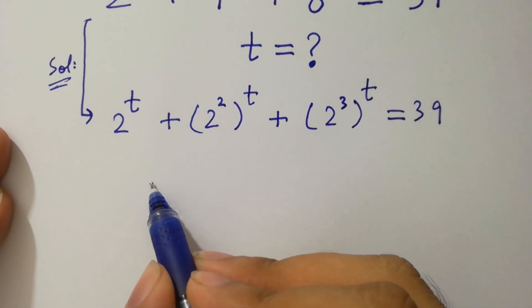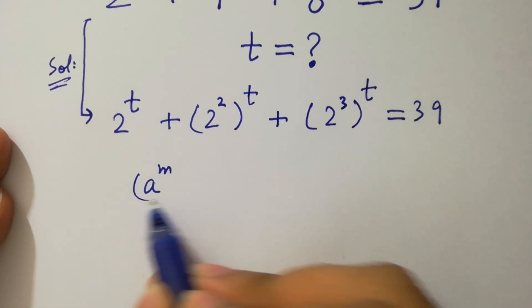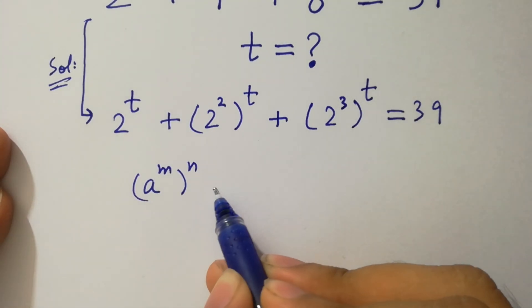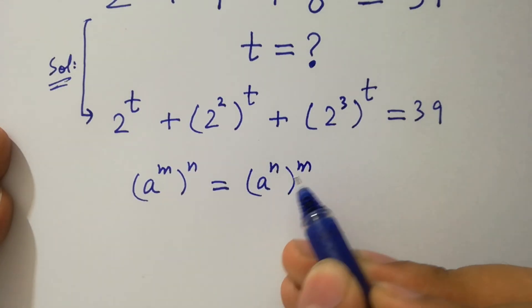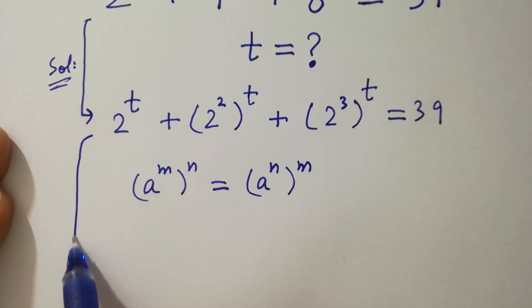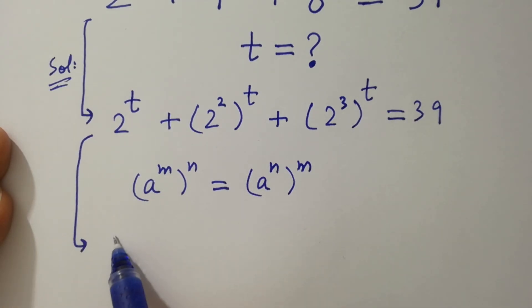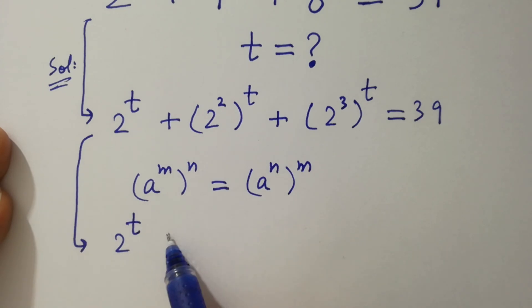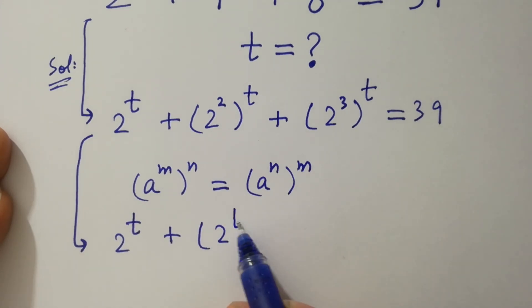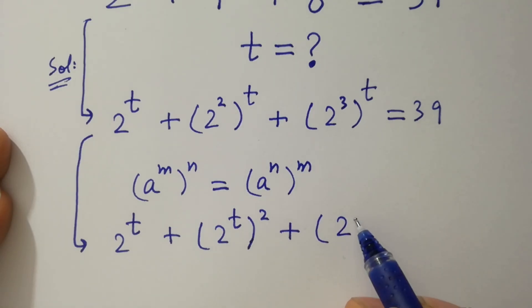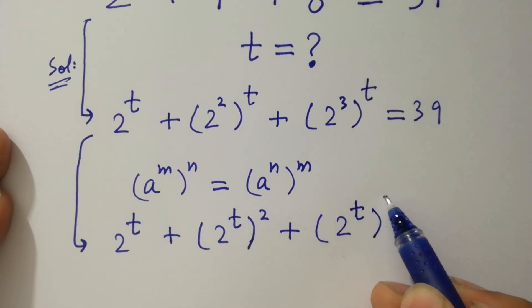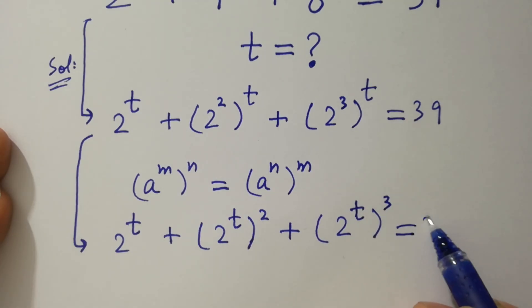Since a to the power m, to the whole power n, equals a to the power n to the whole power m, it will become 2 to the power t, plus 2 to the power t to the whole power 2, plus 2 to the power t to the whole power 3, equal to 39.